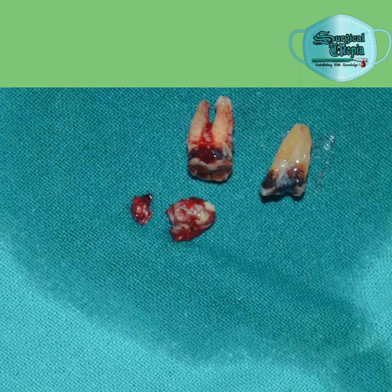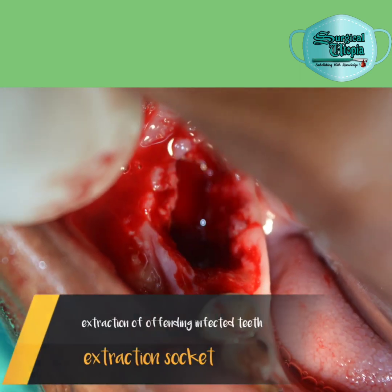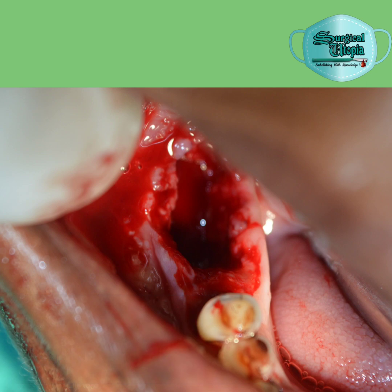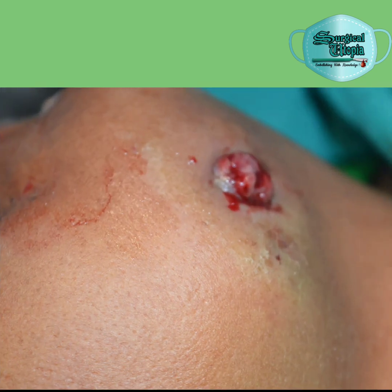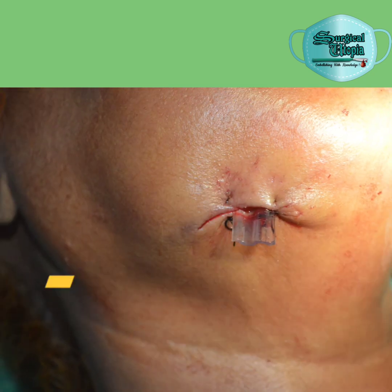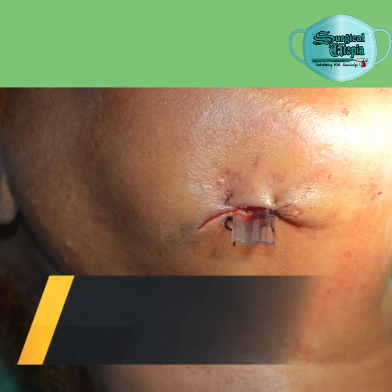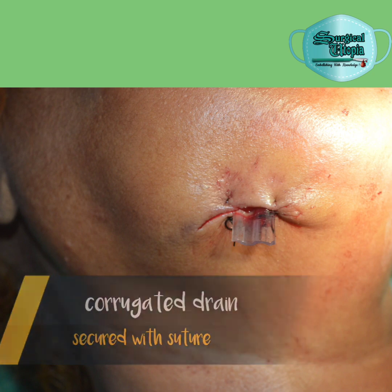The offending tooth was 6-7 and it was extracted. The extraction socket was used for drainage of pus. The extra-oral sinus was de-epithelialized and a corrugated drain was placed, sutured, and secured. The patient was then placed on antibiotics and subsequently follow-up was done.